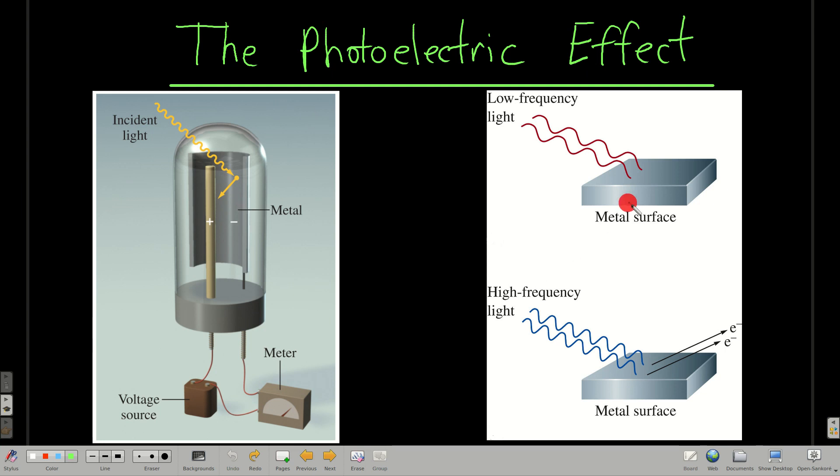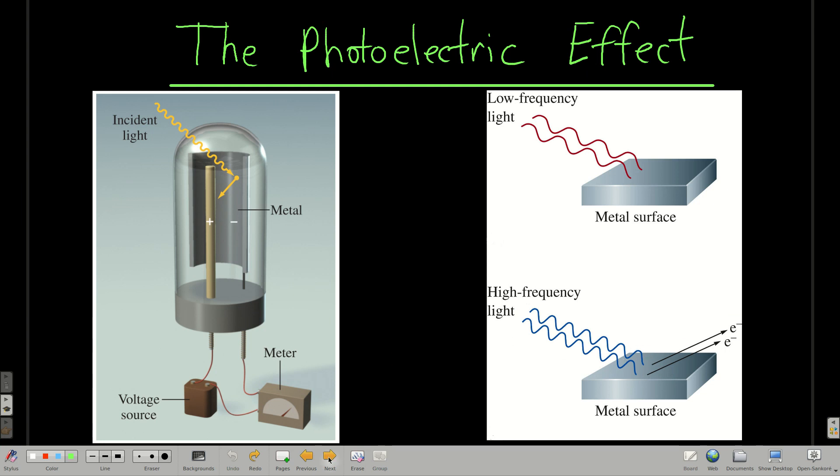So this picture over here is the basic idea. If it's a low frequency light that hits the metal, nothing happens. Once you hit a certain frequency, called the threshold frequency, and any frequency higher than that, you kick electrons off of the metal surface. So that's the picture, and here's what Einstein said.